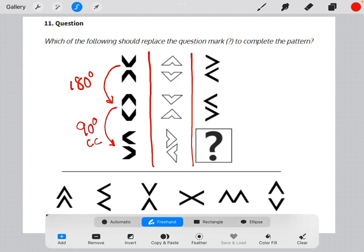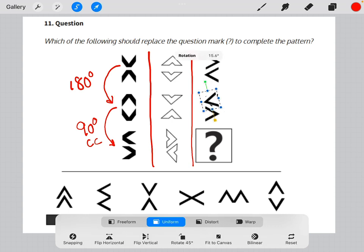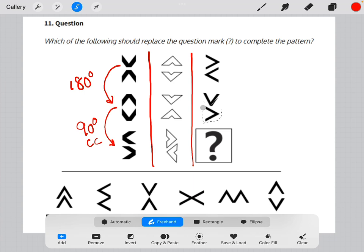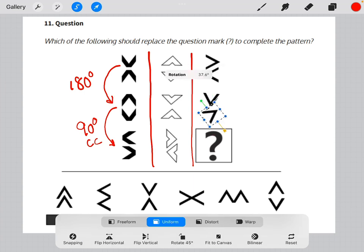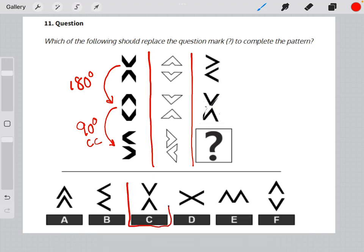So if we apply that same logic to this element right here above our missing element, 90 degree clockwise rotation, 90 degree clockwise rotation, we will see that our correct answer is answer choice C.